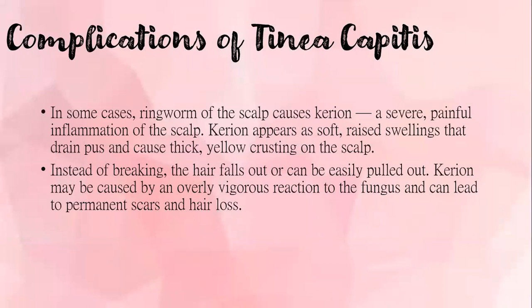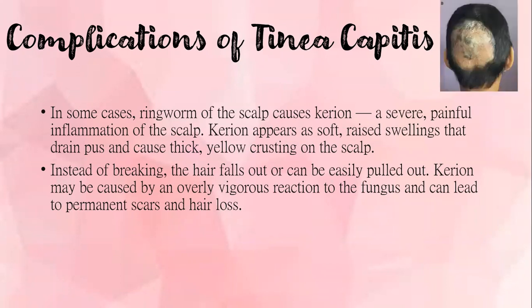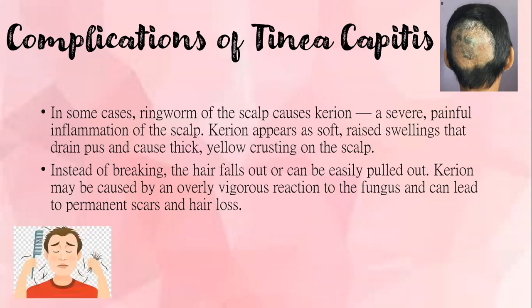For the complications of tinea capitis, in some cases ringworm of the scalp causes a kerion, which is a severe, painful inflammation of the scalp. It appears as a soft, raised swelling that drains pus and causes thick yellow crusting on the scalp. The hair falls out or can be easily pulled out. Kerion may be caused by an overly vigorous reaction to the fungus and can lead to permanent scars and hair loss.